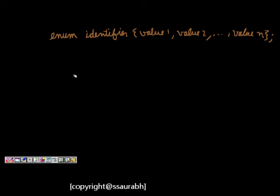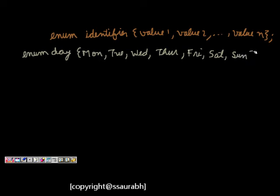Let's say enum day. A day can be either Monday, Tuesday, Wednesday, Friday, Saturday, Sunday. These are the only different kinds of values the variable day can take. Now we can say enum day, day 1 and day 2.